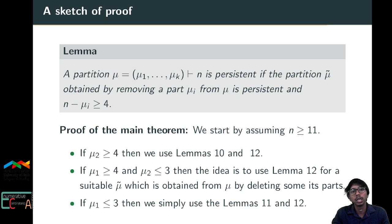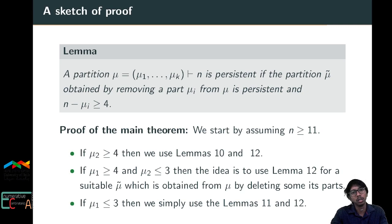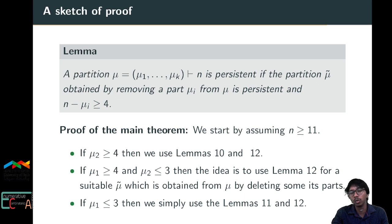If μ₁ ≥ 4 and μ₂ ≤ 3, we ask whether 3 occurs at least twice — if so, (3,3) is persistent and repeated application of the lemma gives μ persistent. If 2 occurs at least twice, (2,2) is persistent and the same argument applies. If 2 and 3 each occur at most once but 1 occurs at least once, then μ₁ ≥ 5 making (μ₁, 1) persistent, and again μ is persistent.